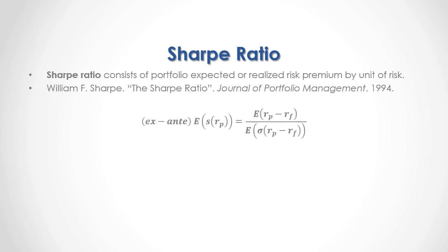As a formula, first we have the ex ante or expected Sharpe Ratio of Portfolio Returns, which is equal to — within the numerator — the expected risk premium, where that risk premium is the difference between the portfolio returns minus the risk-free return, which is then divided by the expected risk premium standard deviation, denoted by the Greek letter sigma.